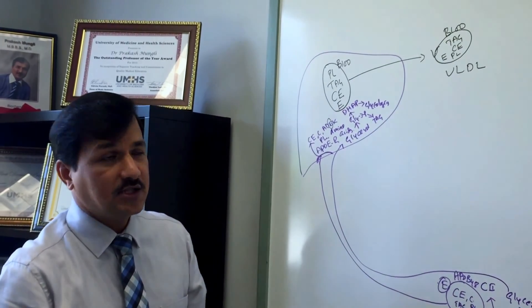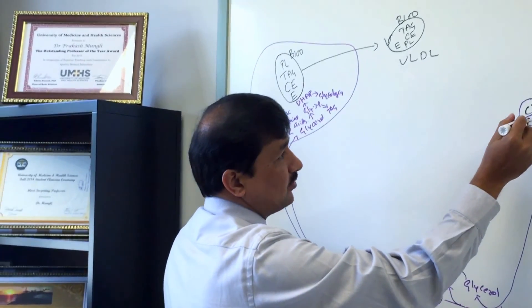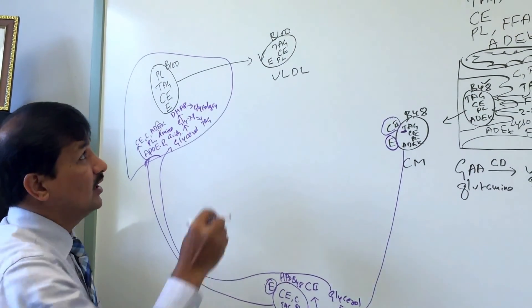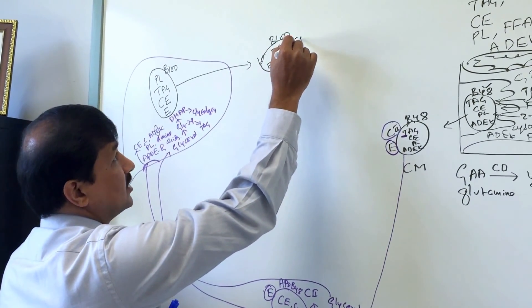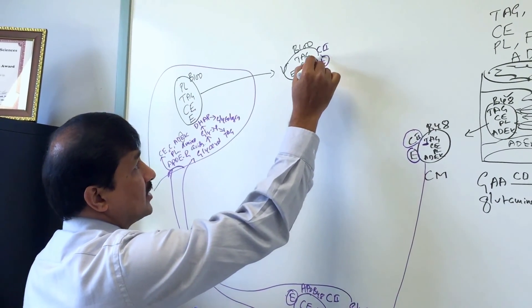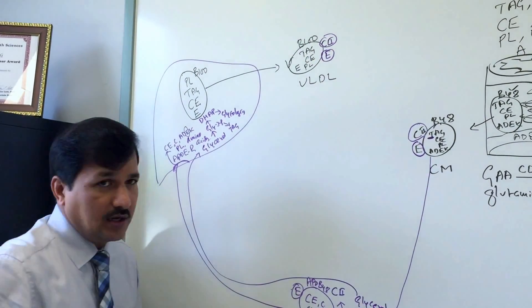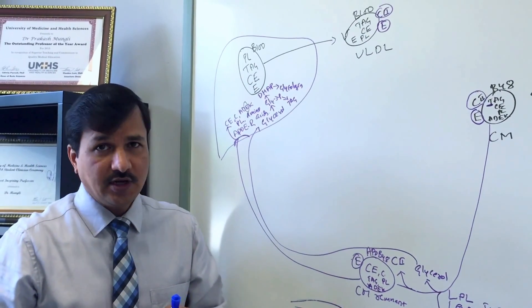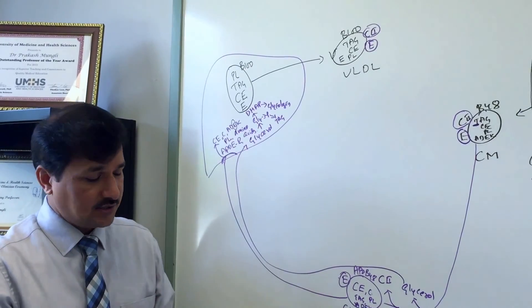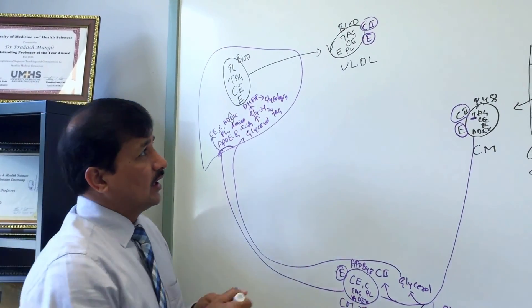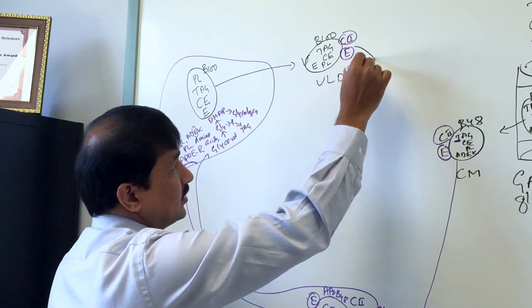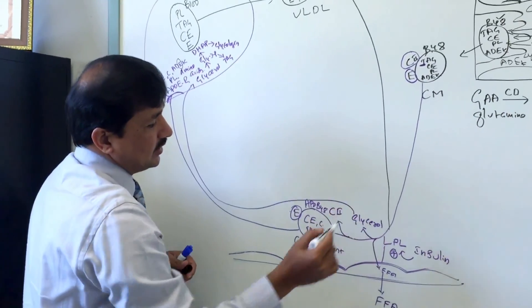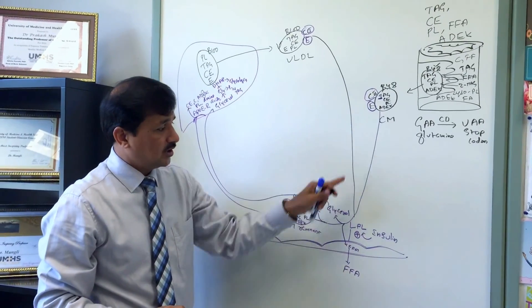This nascent VLDL will acquire ApoC2 and ApoE from HDL — just like chylomicrons, which we have seen take ApoE and ApoC2 from HDL. In the same way, ApoC2 and ApoE are given by HDL to VLDL. Now this VLDL is considered a matured VLDL, and this maturation occurs in the circulation.